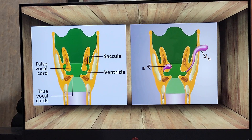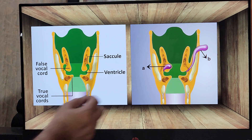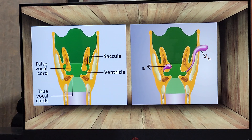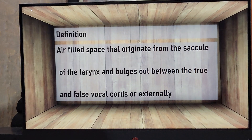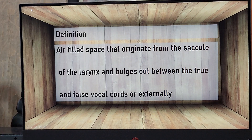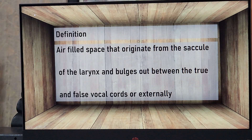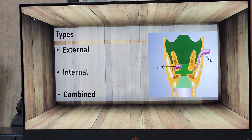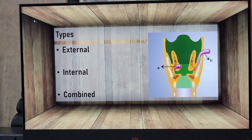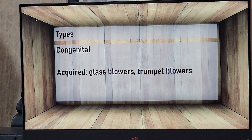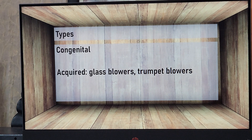If the swelling is inside, it is called internal laryngocele. If it is outside, it is called external laryngocele. If it is combined, then it is called combined laryngocele. Laryngocele can be congenital or acquired. The causes for acquired laryngocele have already been mentioned.